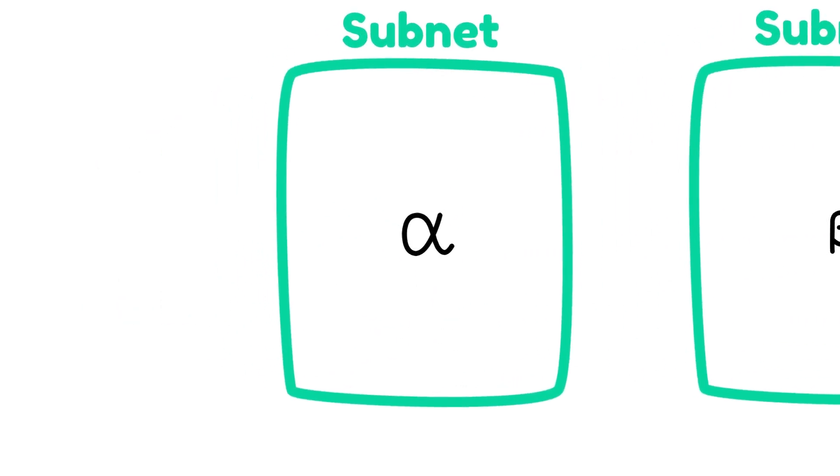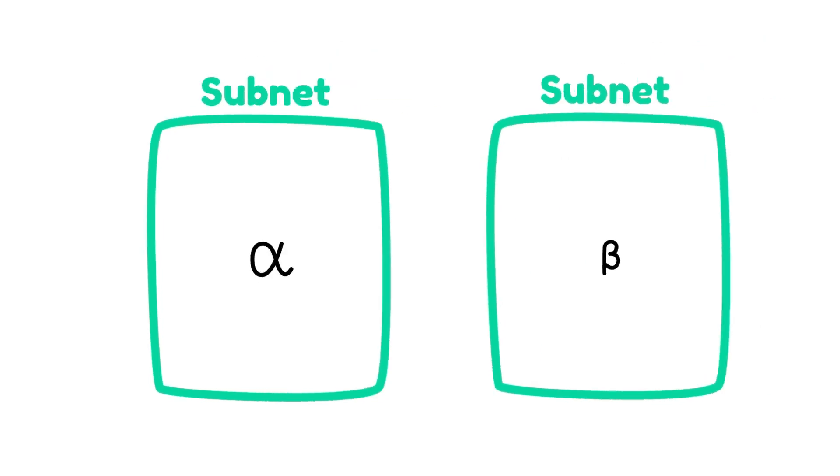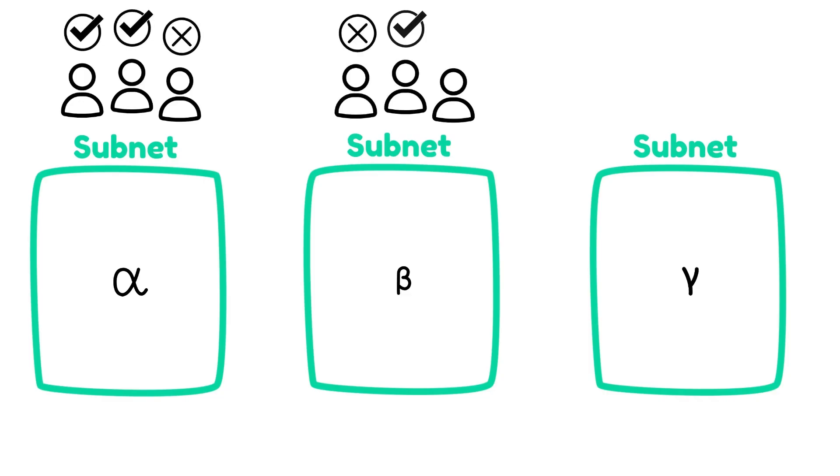Alpha tokens are used to help the network determine which subnets are the most valuable. This means that staking to a subnet is akin to a democratic vote. If you hold an alpha token, you believe that that subnet has more value than other subnets.